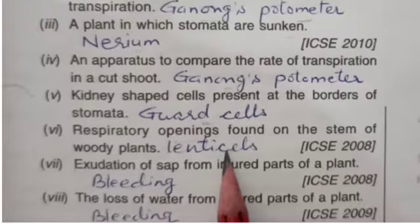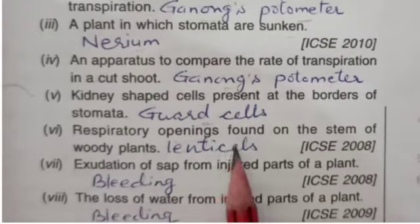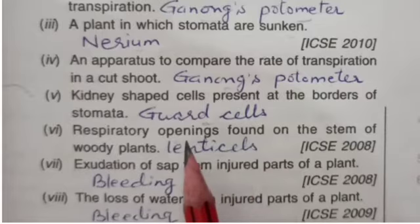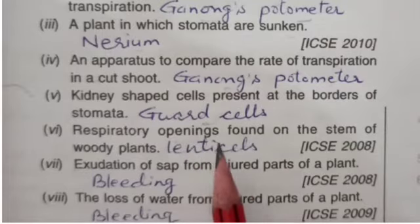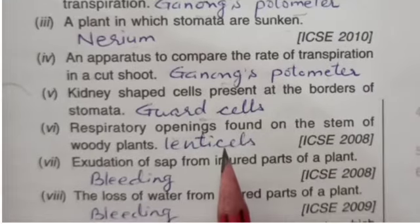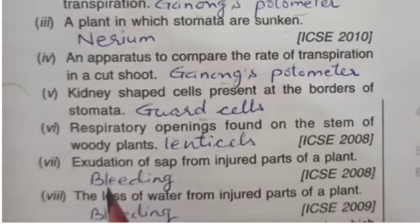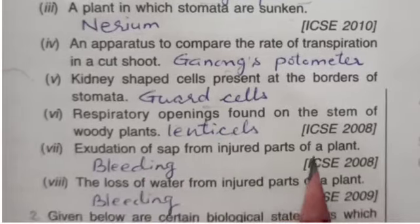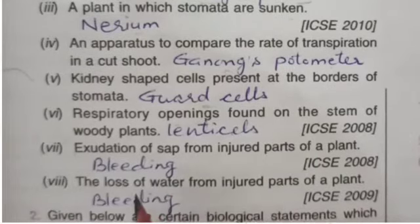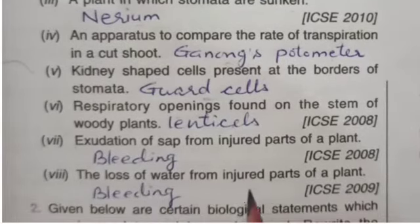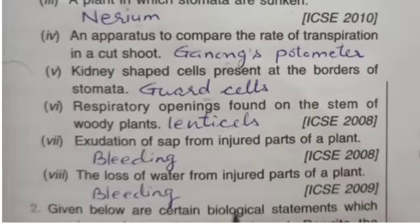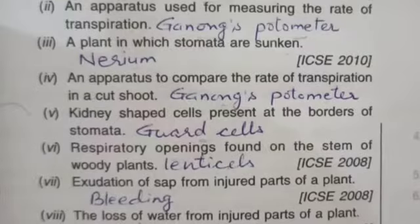Lenticels are permanent open pores in the bark of the old woody tree. They are also called respiratory openings because they remain open during daytime as well as nighttime. Exudation of sap from an injured part of a plant is called bleeding, and loss of water from the injured part of a plant is also called bleeding.